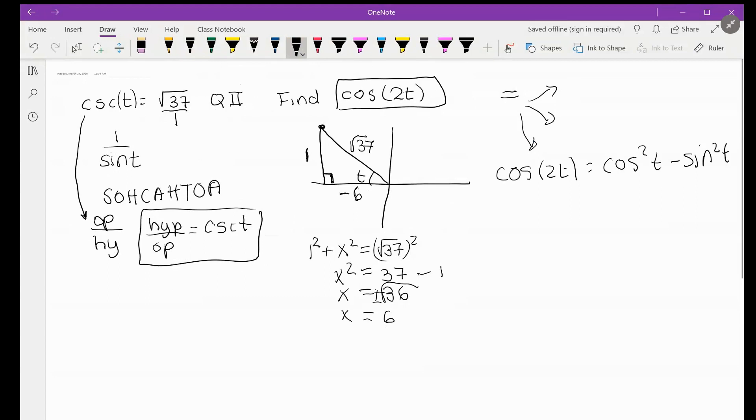So what does that mean? We take cosine of the angle t, which in this case is cosine—remember it's adjacent over hypotenuse—and in this case it's negative 6 over root 37. But they're telling us to square it, and then we subtract hypotenuse over—my bad—opposite over hypotenuse, 1 over root 37, and we also square that.